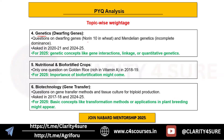The fourth topic is genetics. Questions on the dwarfing gene Norin in wheat and Mendelian genetics like incomplete dominance were asked in 2020 and 2024. While not as frequent, it's still important — future questions might cover other genetic concepts like genetic interactions, linkage, or quantitative genetics.